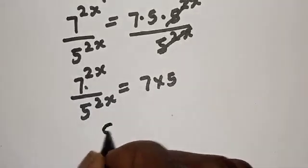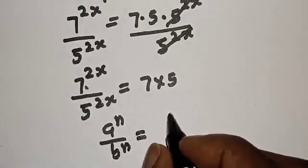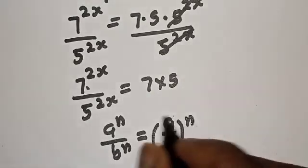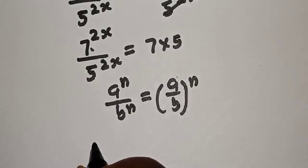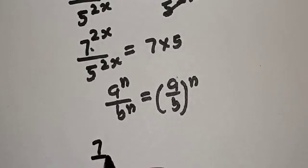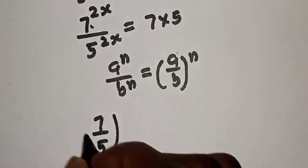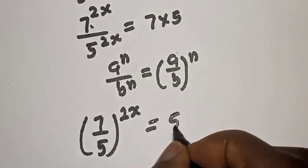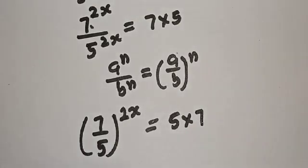Take note of this rule: if you have a raised to power n over b to the power of n, this is equal to a over b to the power of n. Then, this becomes 7 over 5 raised to power 2s is equal to 5 multiplied by 7.